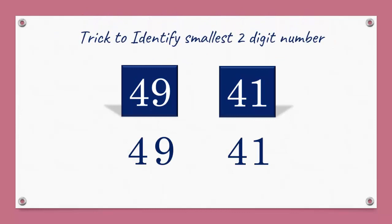How to identify the small number in two digits? Here is 49 and 41. Did you see that the first digit of the number is the same? Now in this case, we have to look at the second digit — that is 9 and 1. Which number is small? Yes, it is 1. That means 49 is big and 41 is small.